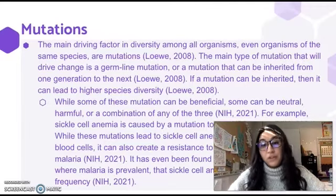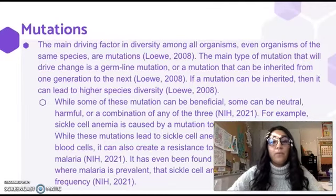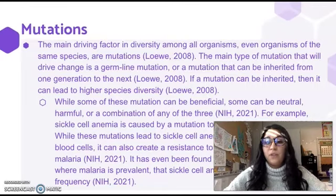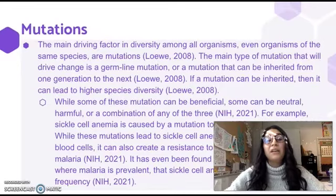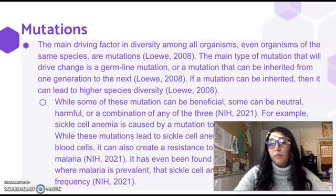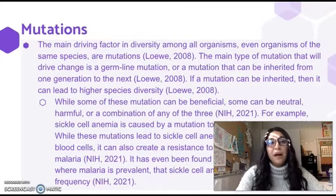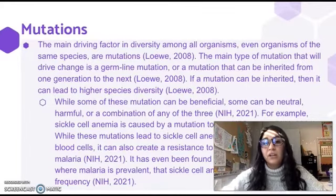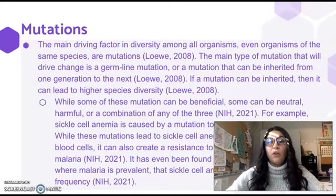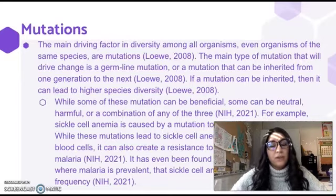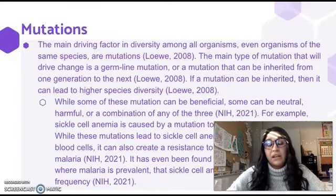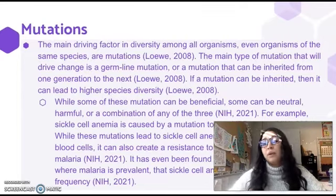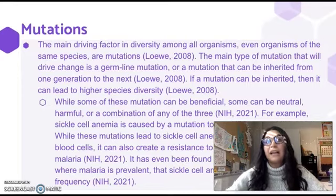Some mutations can be beneficial, some neutral, some harmful, or any combination of the three. Sickle cell anemia is an example. It is generally harmful in that it causes a deformation of the red blood cell, but it can also confer resistance to malaria. In areas where malaria is more prevalent, having sickle cell anemia is actually beneficial — and that is indeed what is found in those populations, where sickle cell anemia is more prevalent.